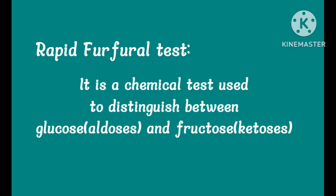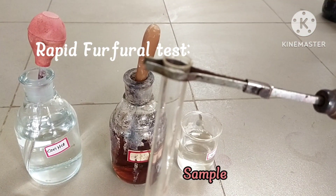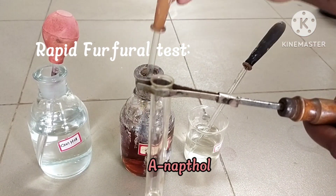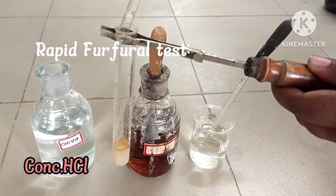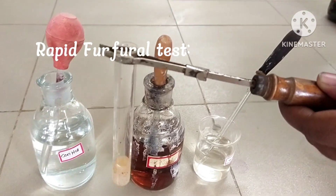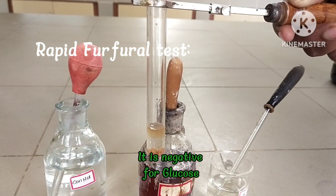Rapid furfural test: This test is used to distinguish between glucose and fructose. The sample is added to ethanolic 1-naphthol and concentrated HCl. The solution is then boiled, and if a purple color appears, fructose is present. This test is negative for glucose. Procedure: To the test tube, add 1–2 ml of sample solution, then add 1 ml of alpha-naphthol solution and 5 ml of concentrated hydrochloric acid. Boil the solution. No color appears — this test is negative for glucose.